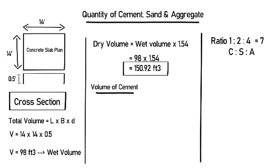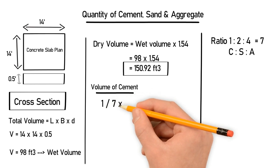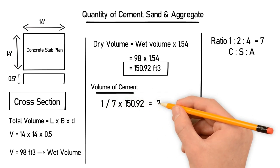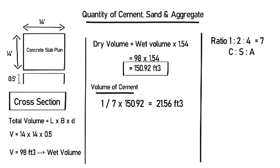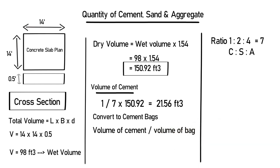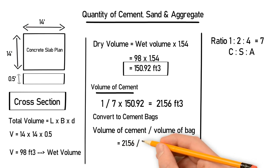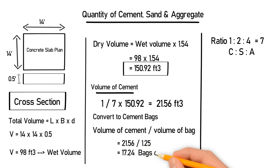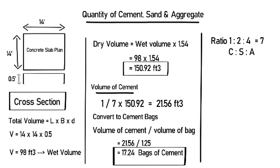For the volume of cement: ratio of cement (1) divided by total ratio (7), multiplied by the dry volume of 150.92, gives a cement volume of 21.56 cubic feet. To find the number of bags required, divide the volume of cement by the volume of one bag (1.25 cubic feet), giving 17.24 bags — so you will need 18 bags of cement for this job.